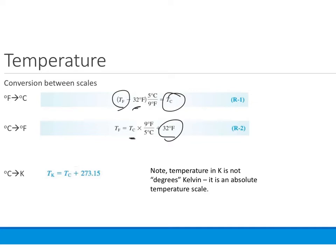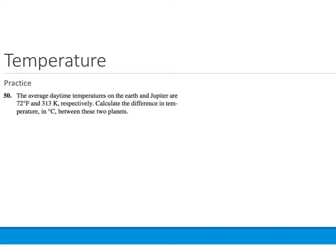With Kelvin, to go from temperatures in degrees C to Kelvin, you simply add 273.15. So let's practice. The average daytime temperatures on Earth and Jupiter are 72 degrees Fahrenheit and 313 Kelvin respectively. Calculate the difference in temperature in degrees C between these two planets.